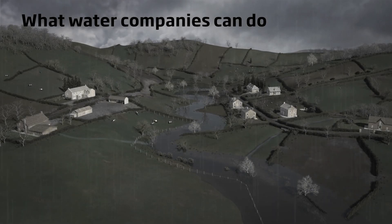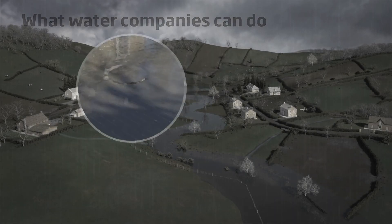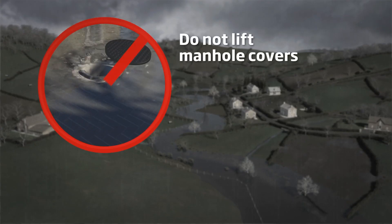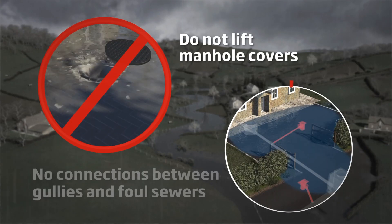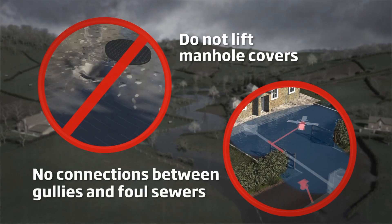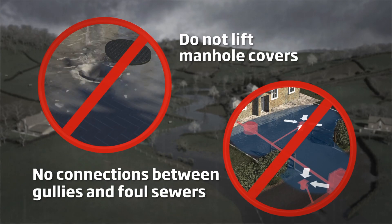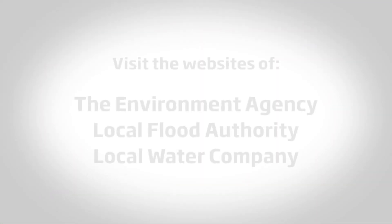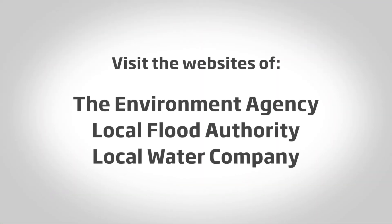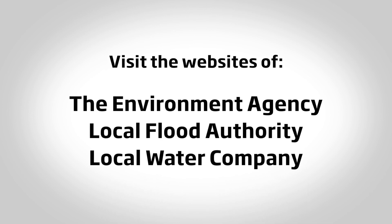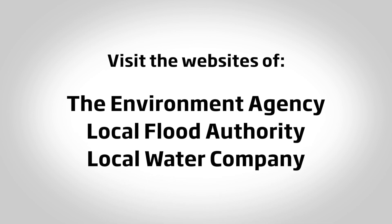If you live in an area susceptible to high levels of groundwater, remember: during flooding, do not attempt to lift manholes. Do not connect rainwater pipes or gullies to the foul sewer system unless you have obtained permission from your water company. For more information on groundwater flooding in your area, visit the websites of the Environment Agency, your lead local flood authority and your water company.